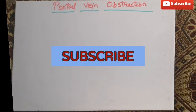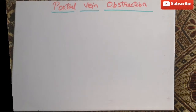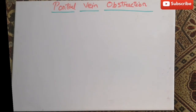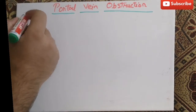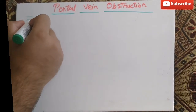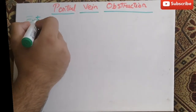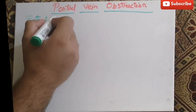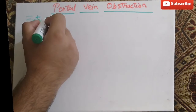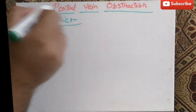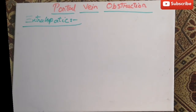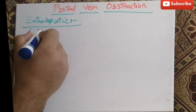Welcome to Doctors World. In this video we will discuss portal vein obstruction. First, there is blockage of the extrahepatic portal vein. The causes that lead to blockage of the extrahepatic portal vein include cirrhosis.